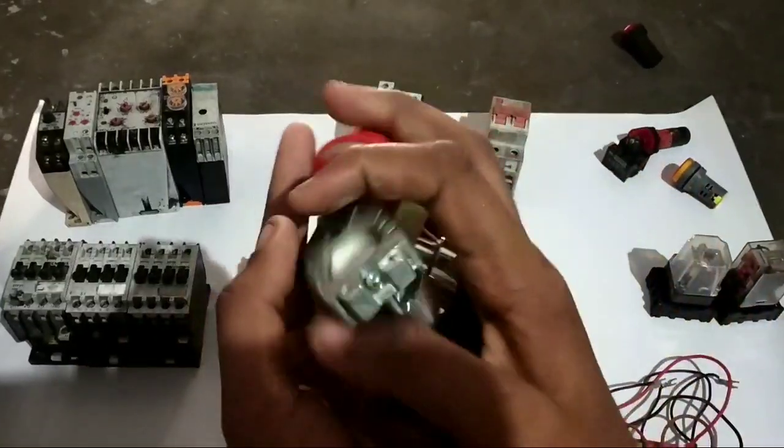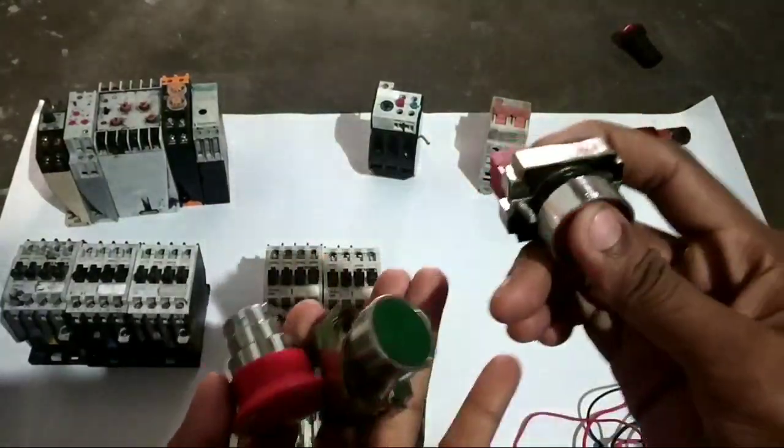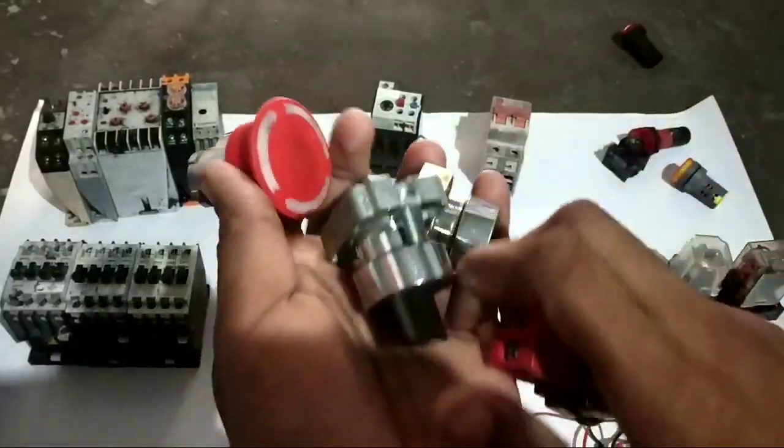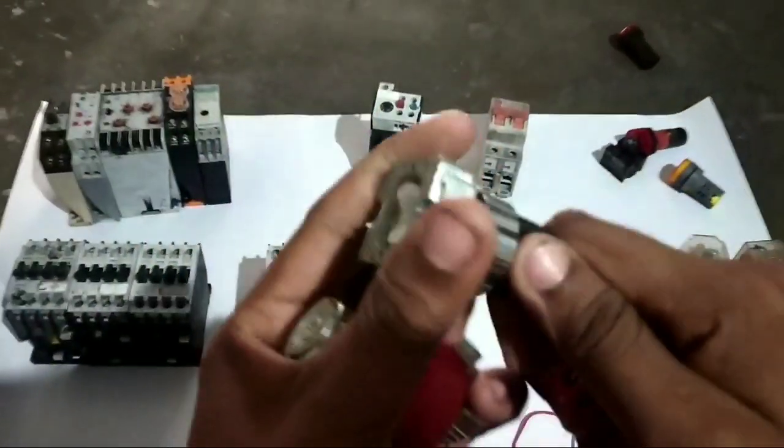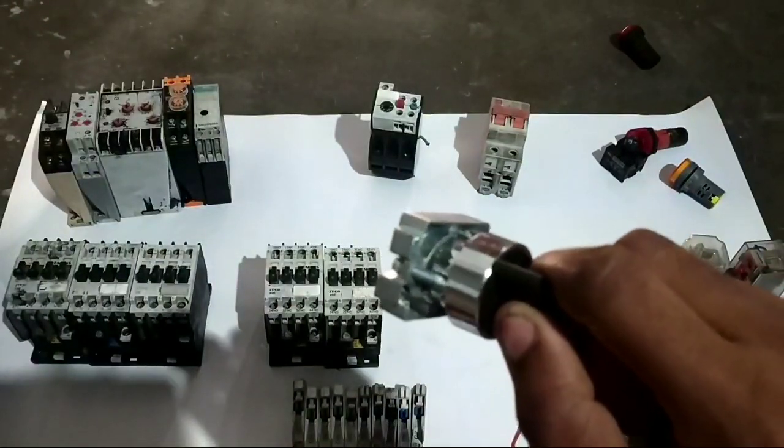You can use the push button. It is NC push button. It is NVO push button. It is select switch. You can use the underlock. Select switch.